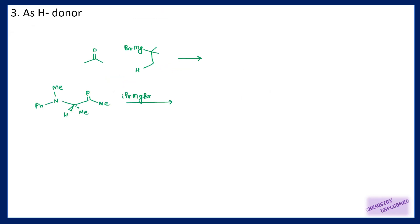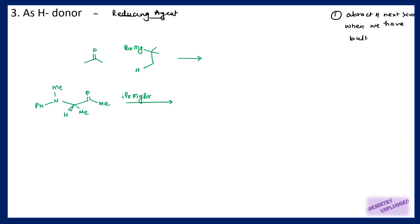Then we will take this organomagnesium compound as a hydride donor, meaning it will act as a reducing agent. This property is very unique. It will be less basic than organolithium compounds, but it can abstract a proton next to a carbonyl. When will it show this reaction? When we have a bulkier or hindered carbonyl compound, and/or when our Grignard reagent is bulkier.